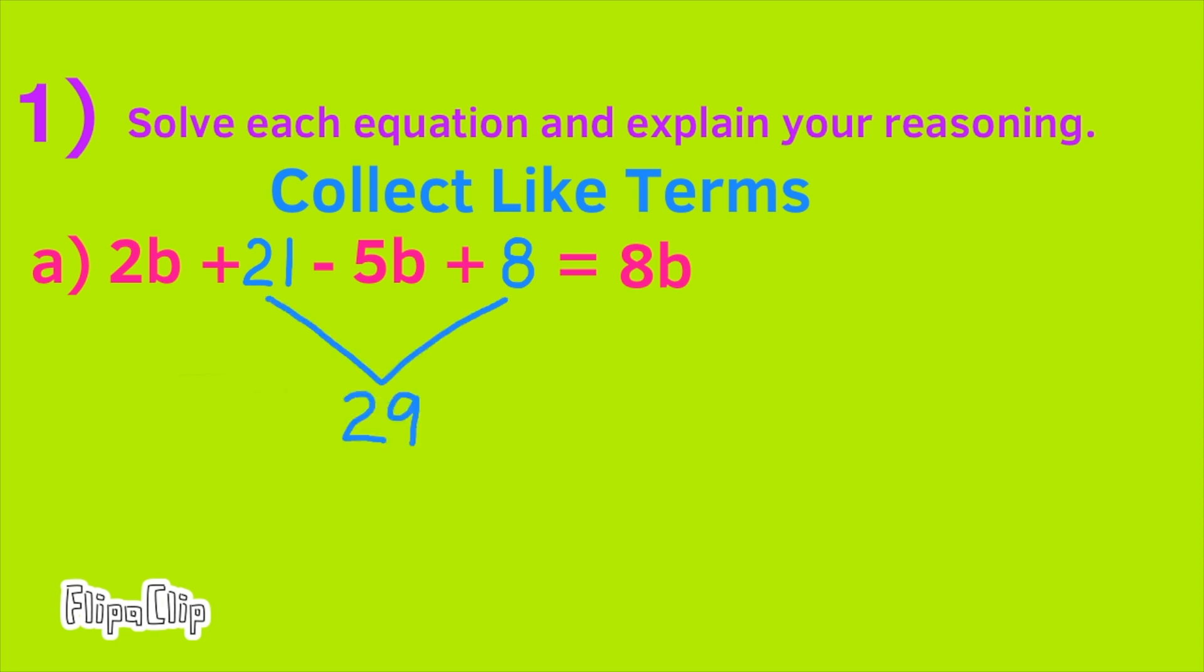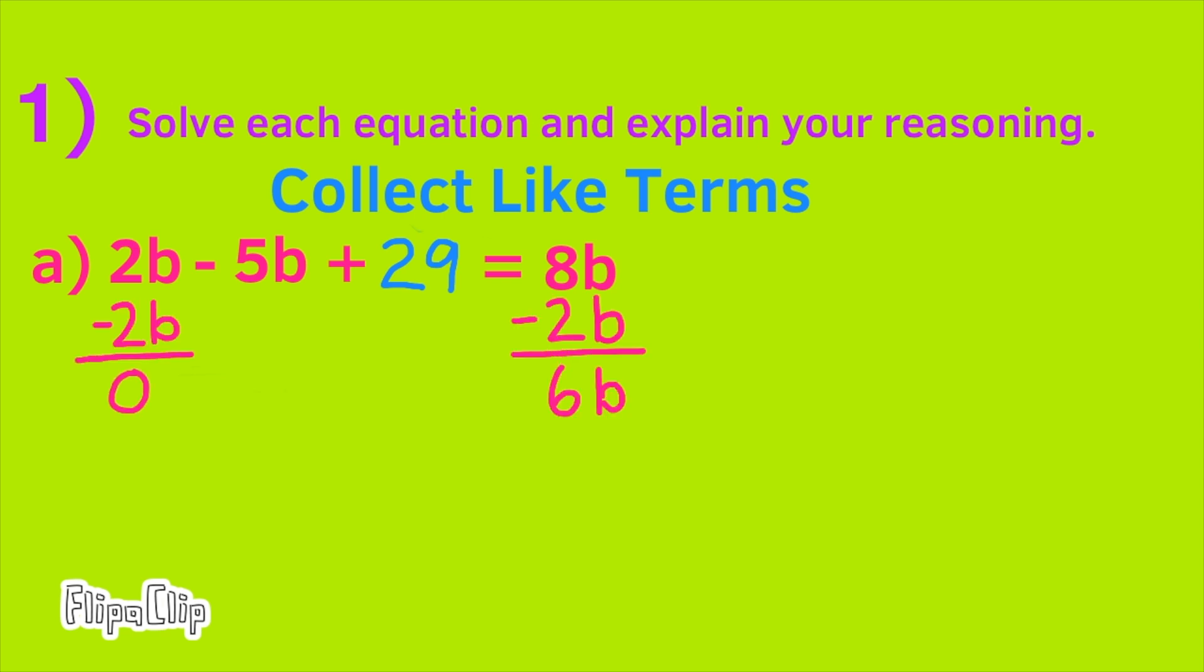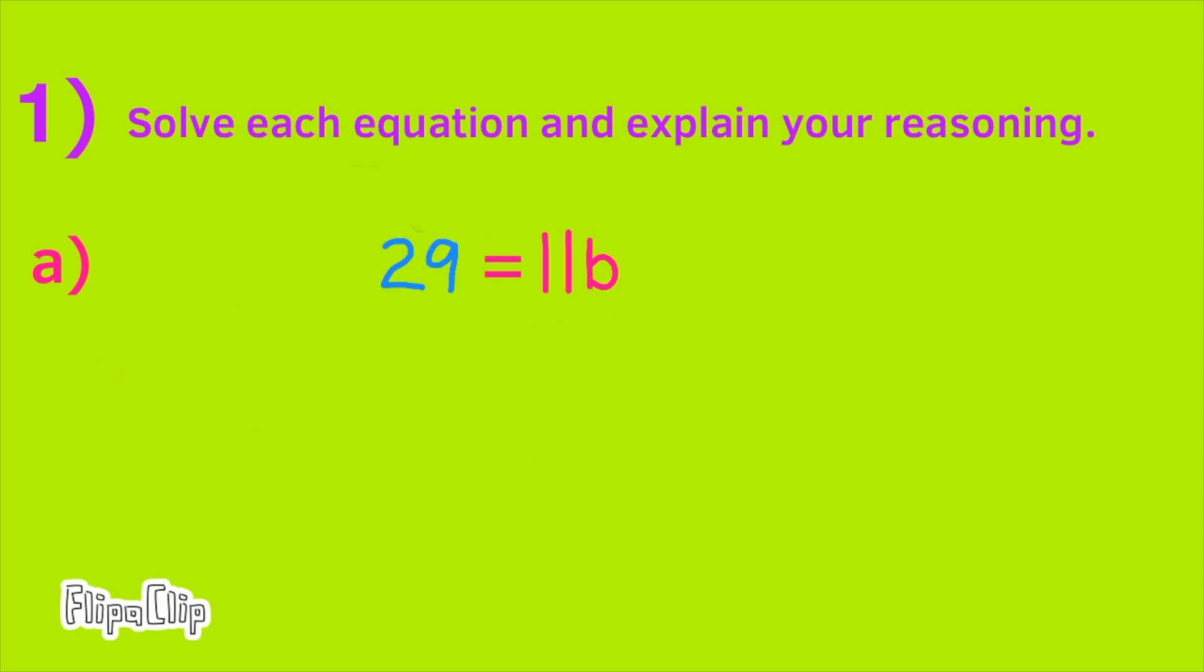Collect the like terms. Take away 2B from both sides. Add 5B to both sides. 29 equals 11B. Divide both sides by 11. 29 elevenths equals B or B equals 29 elevenths.